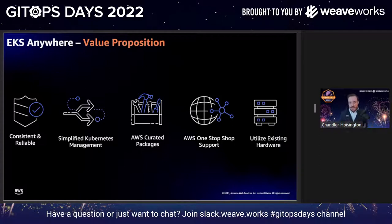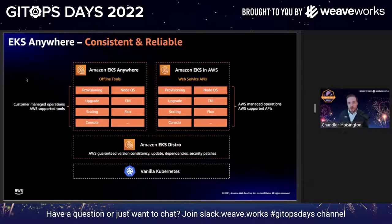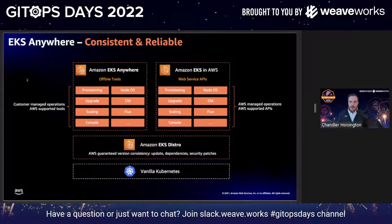The other big value proposition is consistency between EKS and EKS Anywhere. If you're an EKS customer running workloads in the cloud, we can give you the most consistency — not 100%, because these are obviously very different environments, but because we build both products we can provide the most consistency between those two worlds. That might be through UX like our CLI or APIs, or consistency in how control planes are set up and operated. For example, in Amazon EKS we run etcd in what we call unstacked mode on dedicated nodes, and we have a similar architecture for EKS Anywhere on-prem.